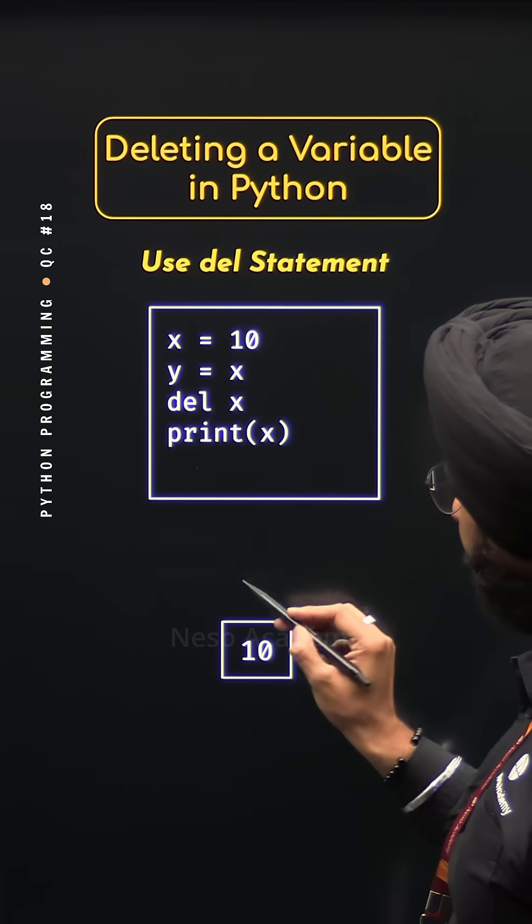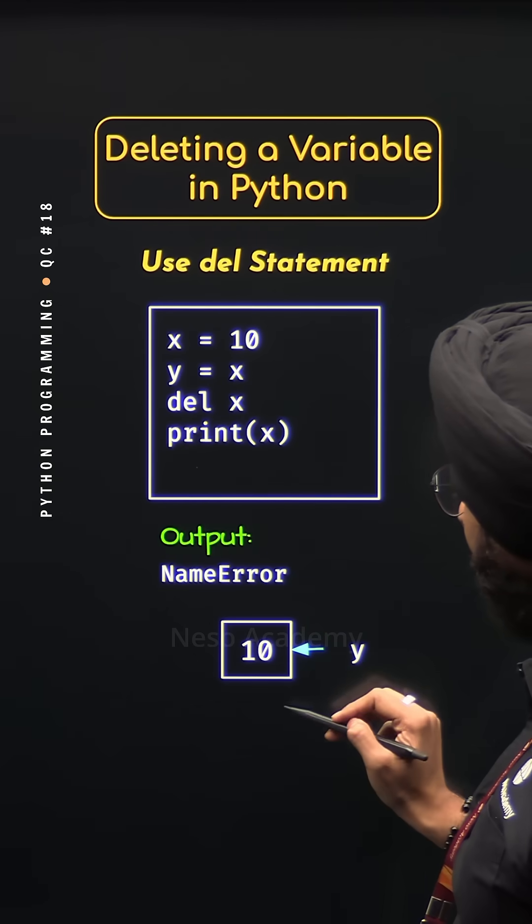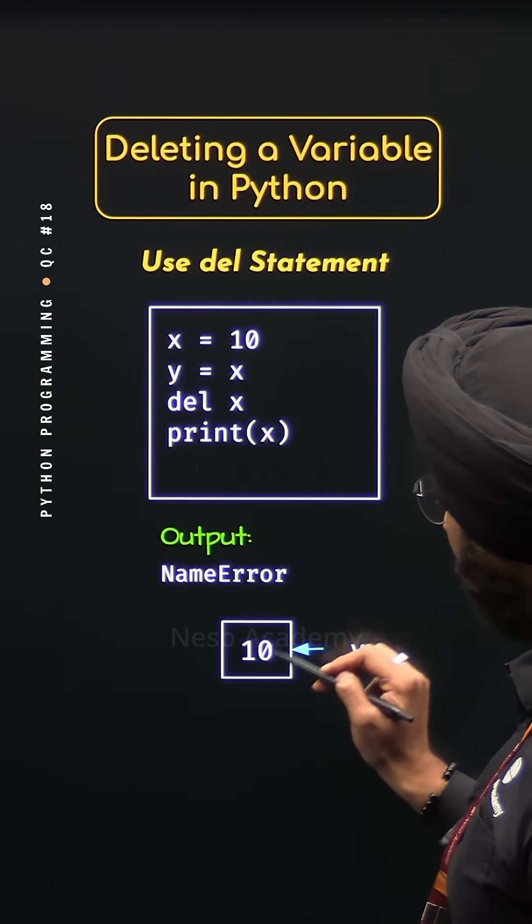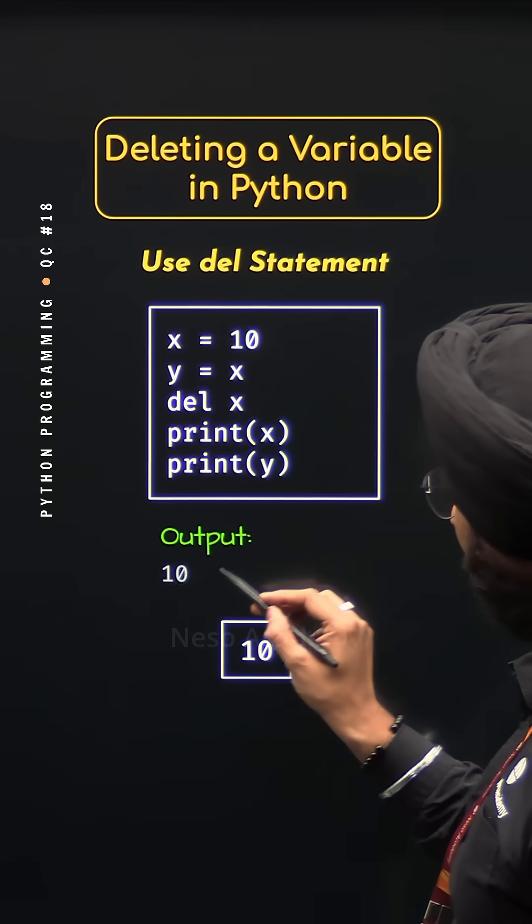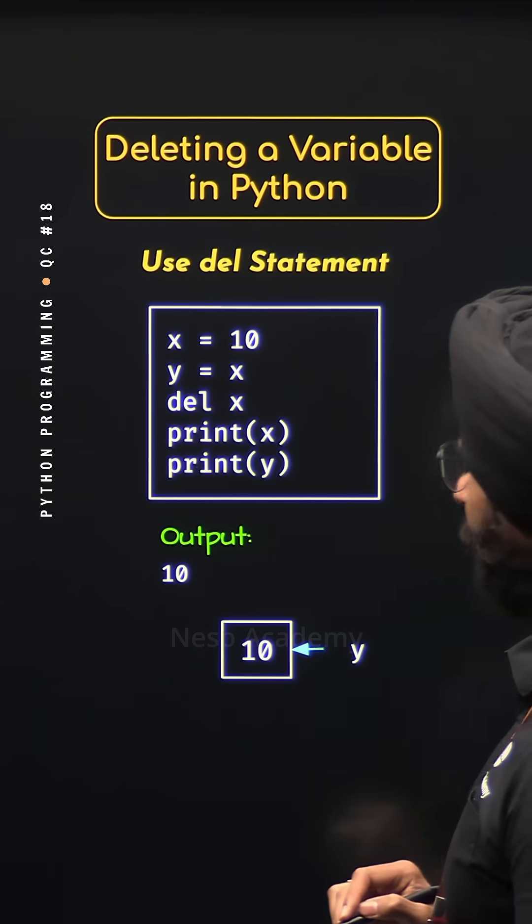If we print x then we will get a name error because name x associated with this value 10 is deleted. But if we print y we will get value 10 because y is still pointing to this value 10.